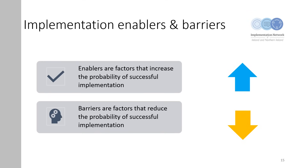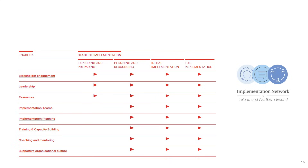Implementation Enablers and Barriers. Enablers are factors that increase the probability of successful implementation — they help facilitate change. Barriers are factors that reduce the probability of successful implementation and are a challenge to the implementation. Having a clear understanding of the implementation enablers and barriers helps to identify the most effective way to implement your innovation. Implementation science has highlighted a number of enablers which increase the probability of any intervention being successfully implemented. Taking the time to identify your enablers and utilising them will increase the pace and effectiveness of implementation and also sustain interventions over time.